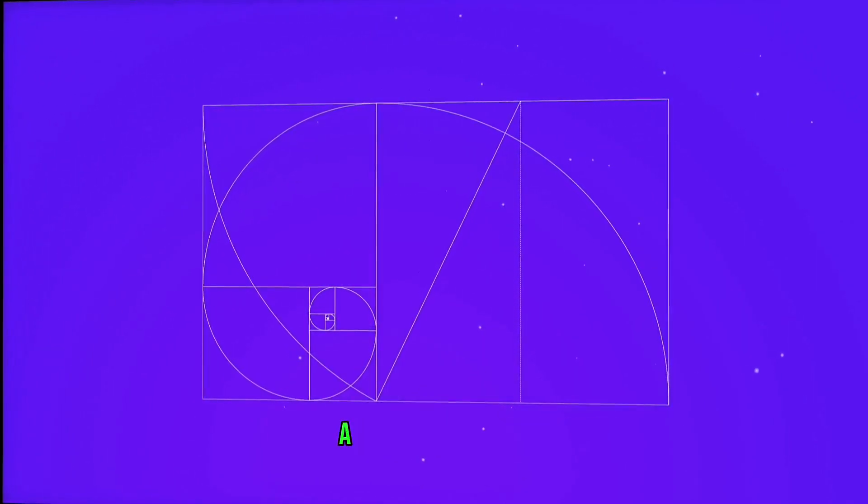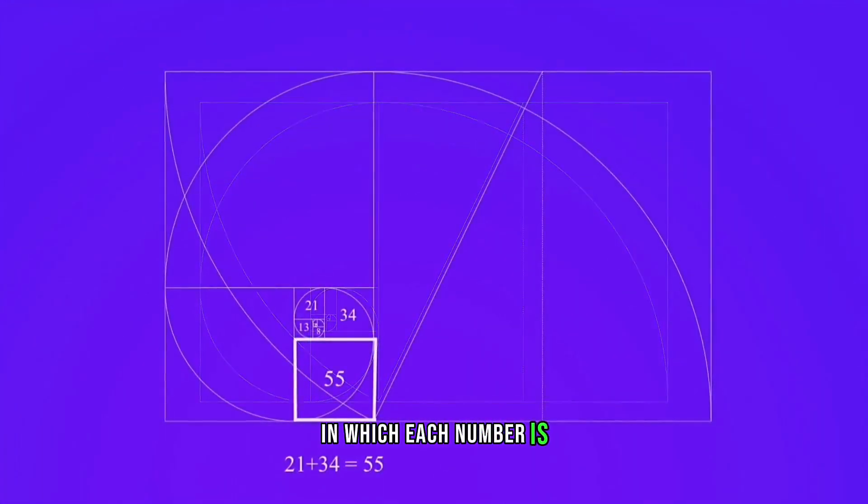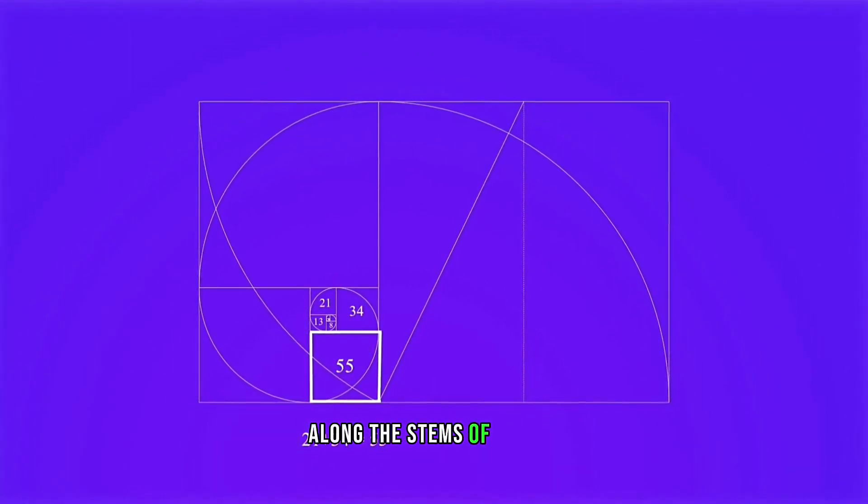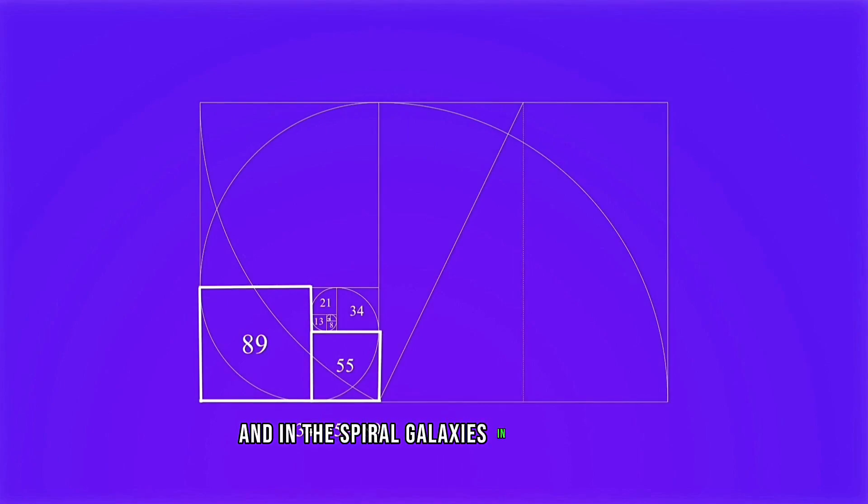Not to mention the mathematical structures that have been found in the cosmos. The Fibonacci sequence, a series of numbers in which each number is the sum of the two preceding ones, can be seen in the arrangement of branches along the stems of plants and in the spiral galaxies in outer space.